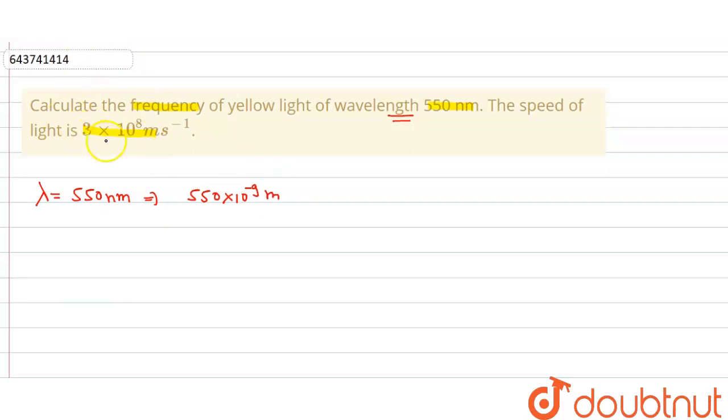And we have given the speed of light c - the speed of light is 3×10^8 meter per second. Here we have to find the frequency, so we know that the frequency f...